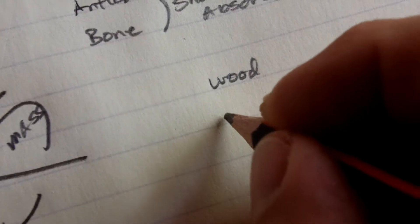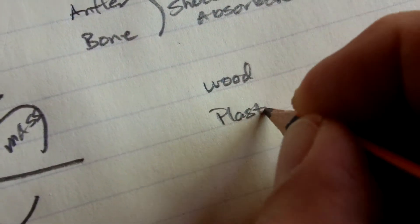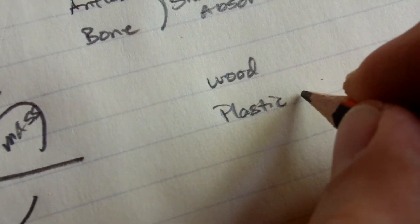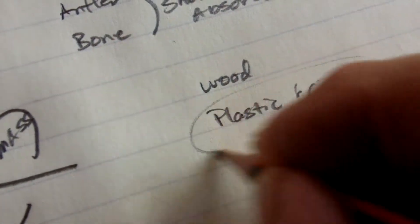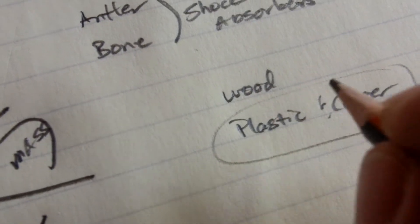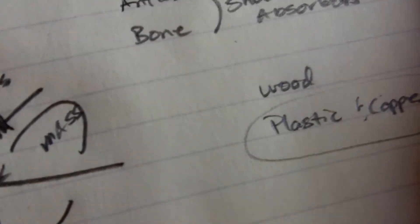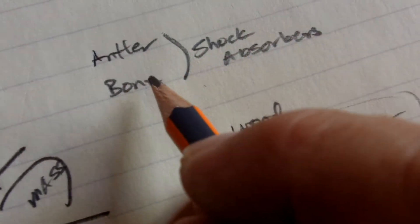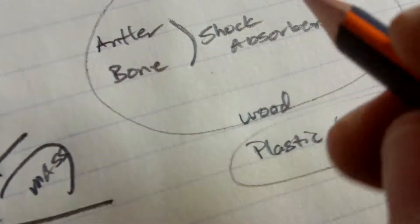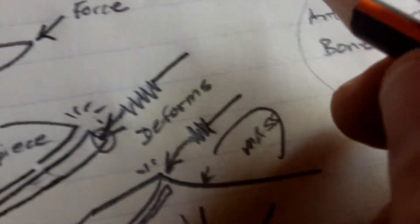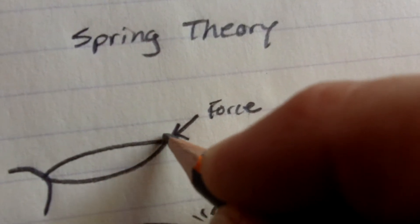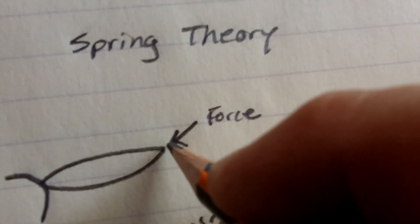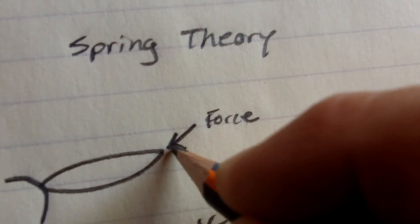I use plastic and copper. And these also have flexibility and spring type properties, but they're slightly different than the natural materials. With the natural materials, on the initial force, the tool deforms quite a bit. Okay, so it takes longer to build up the force.